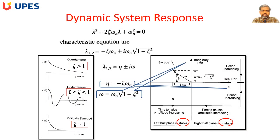We generally study stability using the vibration equation, finding the natural frequency and damping ratio, and plotting the solution on the complex plane with real and imaginary parts. If the roots of the dynamic equation are in the left half plane, the airplane is stable. If the roots are in the right half plane, the airplane is dynamically unstable.